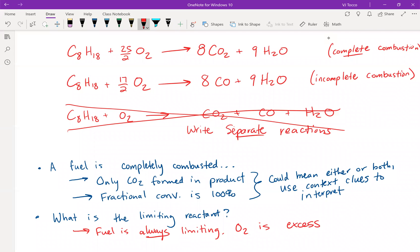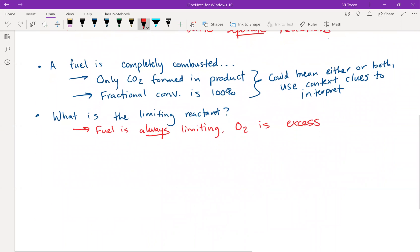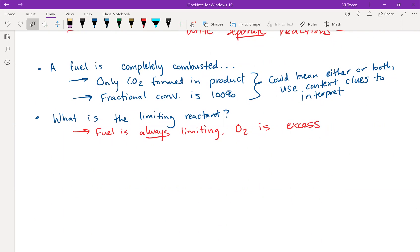You may see a process specification say something like theoretical air or excess air or excess O2. Theoretical O2 is the moles of O2 needed to combust all the fuel.